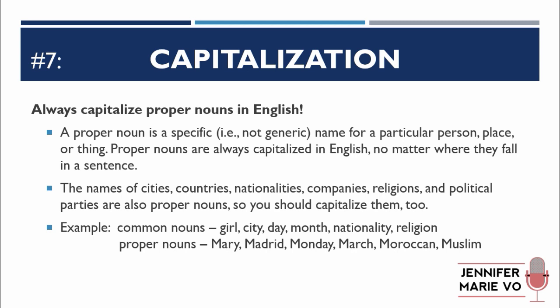The names of cities, countries, nationalities, companies, religions, and political parties are also proper nouns, so you should capitalize them too. Common nouns like girl, city, day, month, nationality, and religion are not capitalized. But their proper noun equivalents are: Mary, Madrid, Monday, March, Moroccan, Muslim — all capitalized. Sentence examples: "Jack is Christian, but his wife is Jewish." "Sarah works at Ford in Paris, France." Ford is a company, so we capitalize it — and also the city and country.